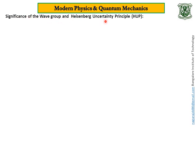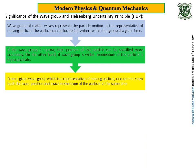First I start with the explanation of significance of wave group, and then Heisenberg's uncertainty principle. This wave group, which I mentioned in my previous video, represents a particle in motion. A wave group of matter waves represents a particle in motion — it is a representative of a moving particle. The particle can be located anywhere within the group at a given time. The wave group is formed due to overlapping of two or more waves having different wavelengths, and it happens only in an anisotropic medium.